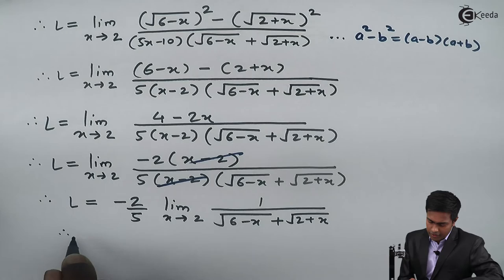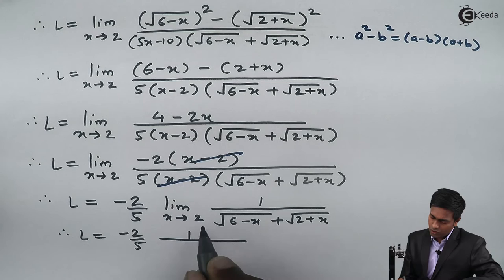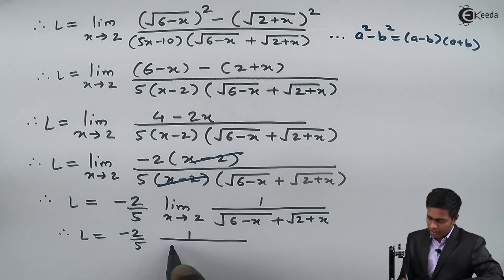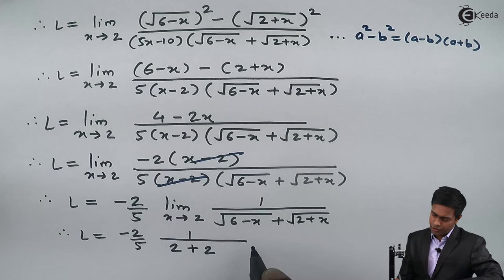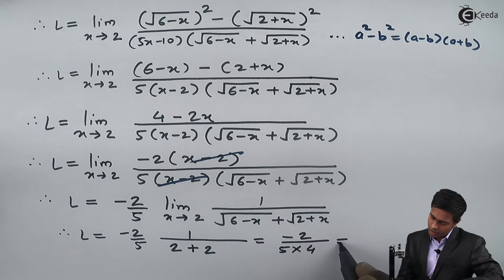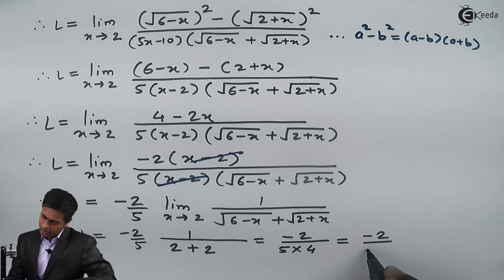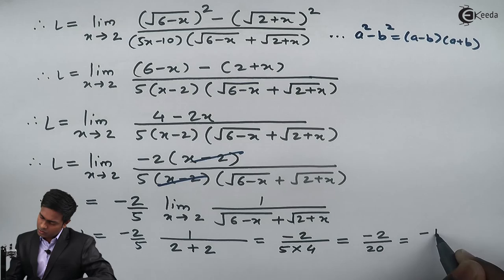Now by the direct method, we get L as minus 2 upon 5, and this term gives us √(6-2) which is √4 equals 2, plus √(2+2) which is √4 equals 2. So 2 plus 2 is 4, giving us minus 2 upon 5 into 4, which equals minus 2 upon 20, and this is nothing but minus 1 upon 10. So the value of the given limit is minus 1 upon 10. Thank you.